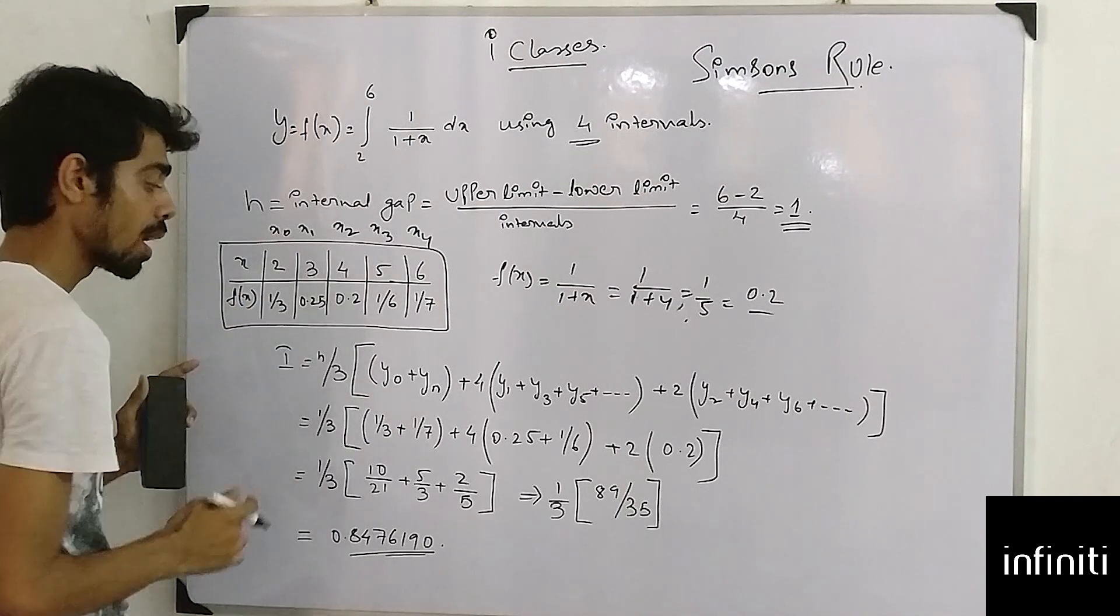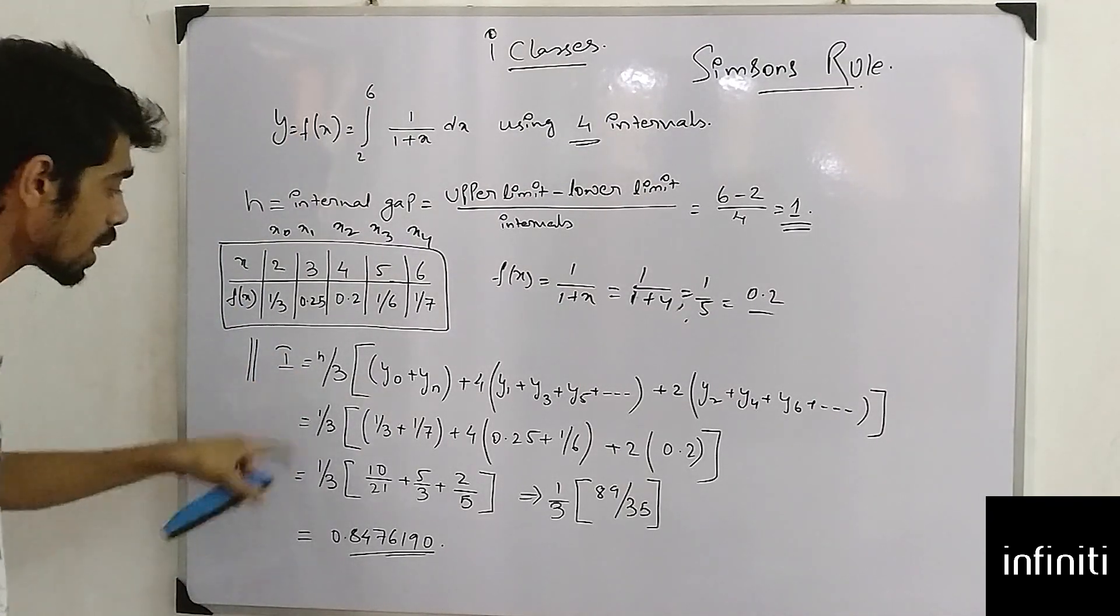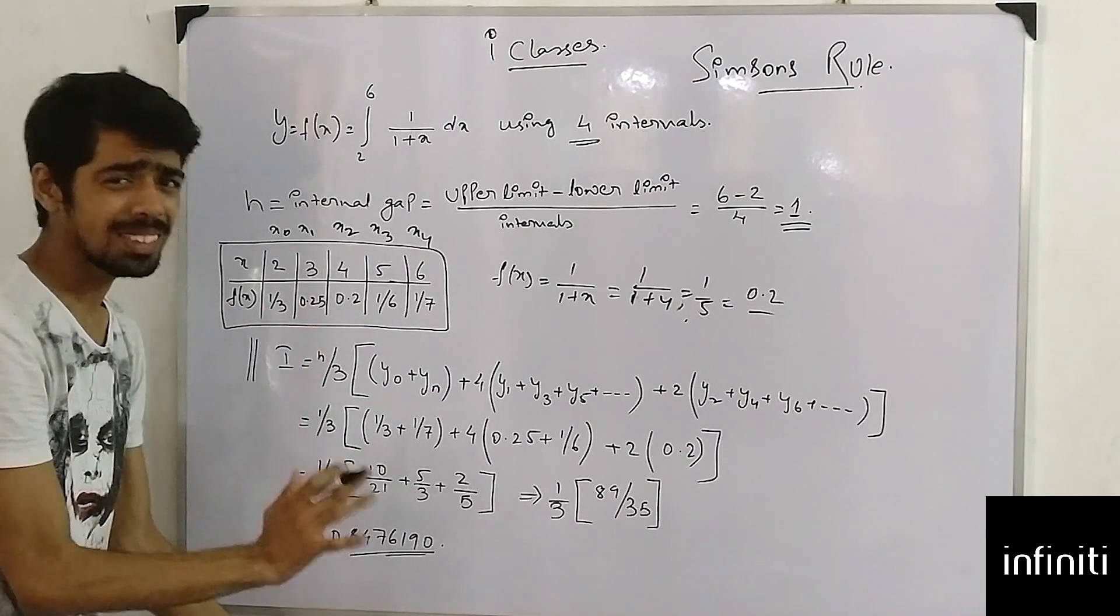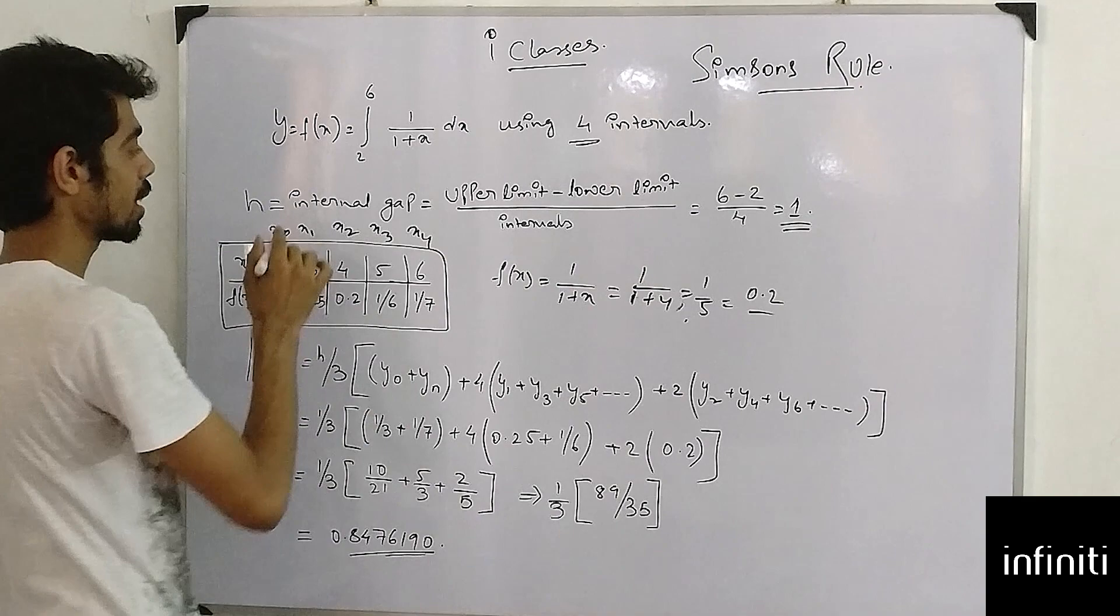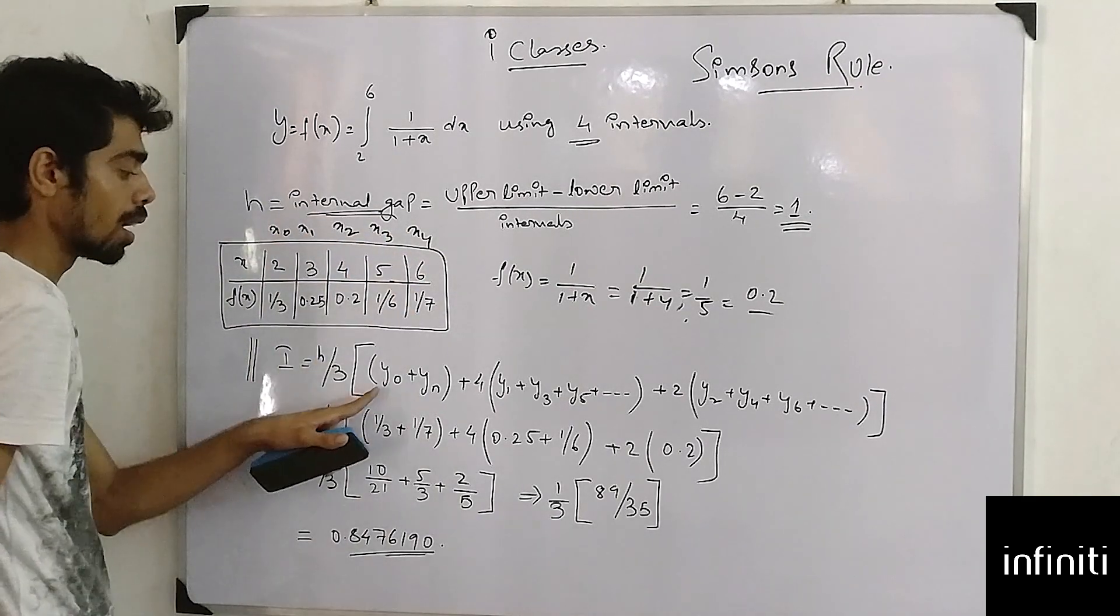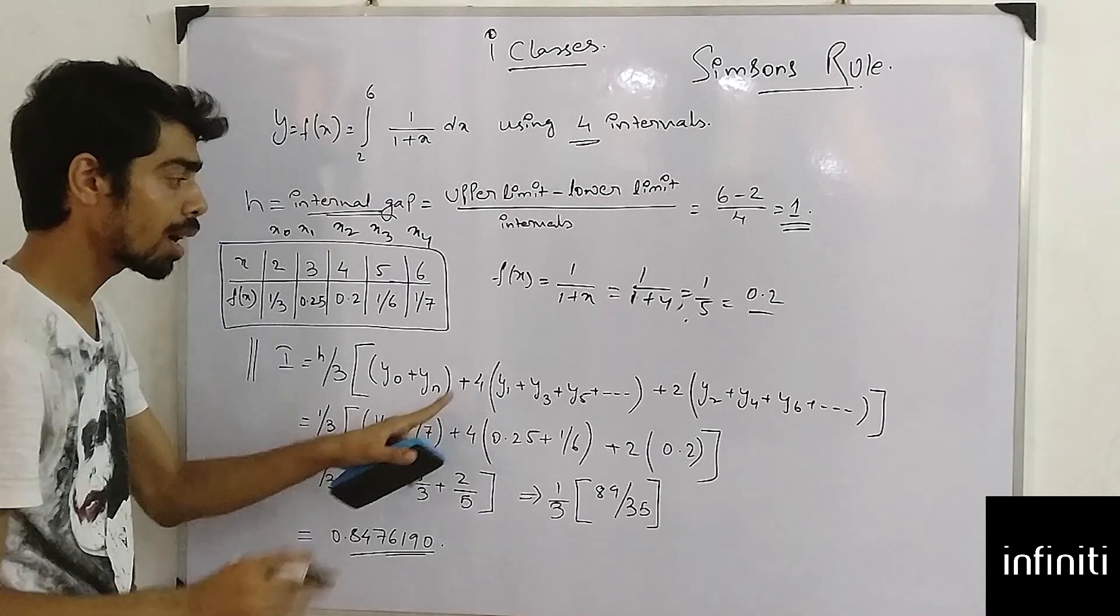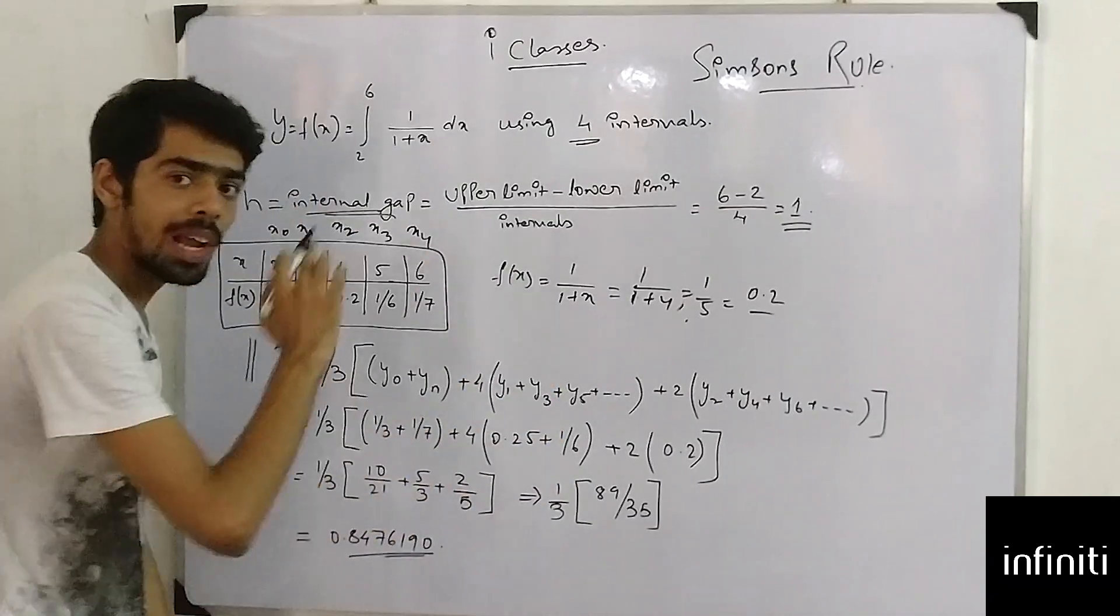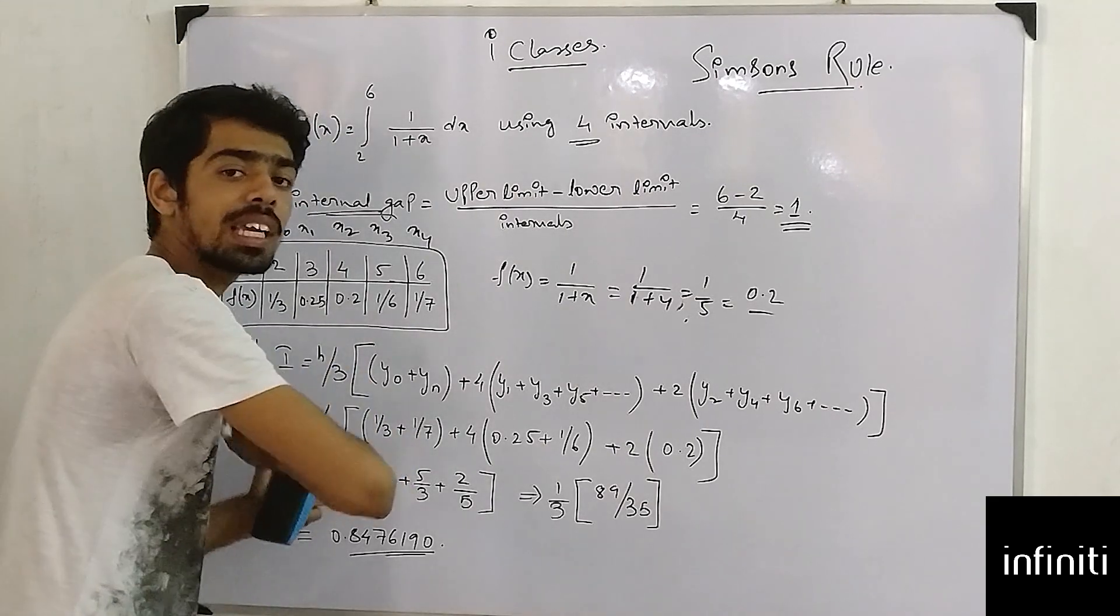Now for Simpson's rule, this is the formula. It's quite easy. The formula is h by 3, which is internal gap, times y0 plus yn. Same as the trapezoidal rule, but here there's a change. In the trapezoidal rule, we multiply with 2 each and every value except these two.